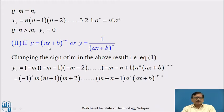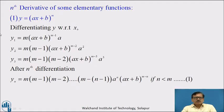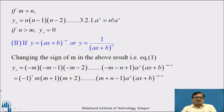Second case: if y = (ax + b)^(−m), or equivalently y = 1/(ax + b)^m. Now, changing the sign of m in equation number 1 — that is, replacing m by −m — we get yₙ = (−m)(−m−1)(−m−2)···(−m−n+1) · aⁿ · (ax + b)^(−m−n).